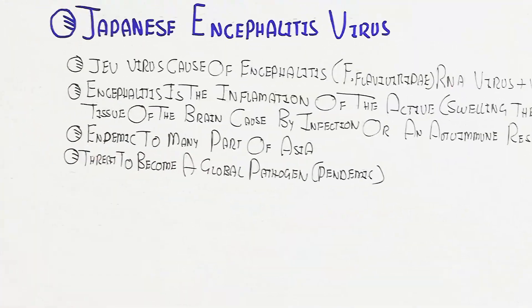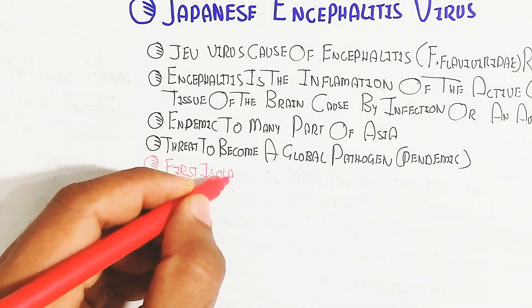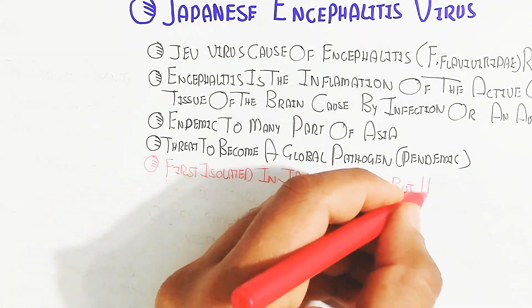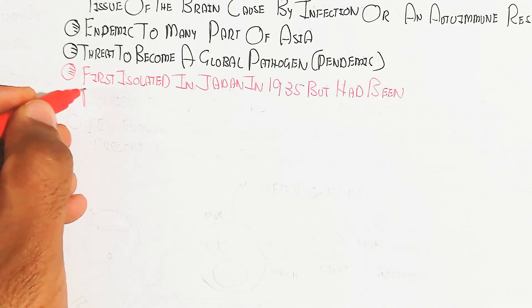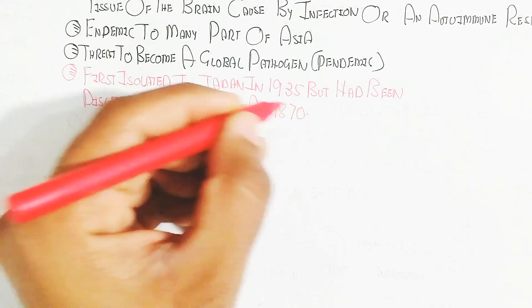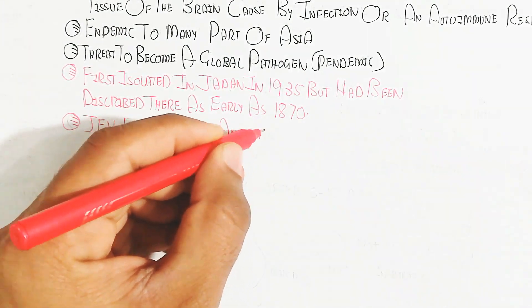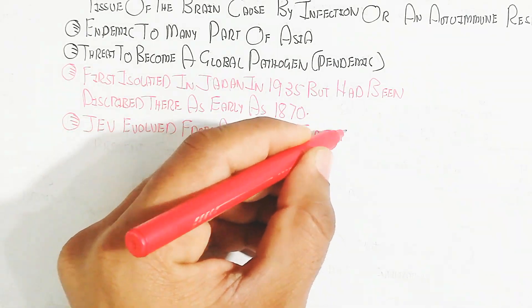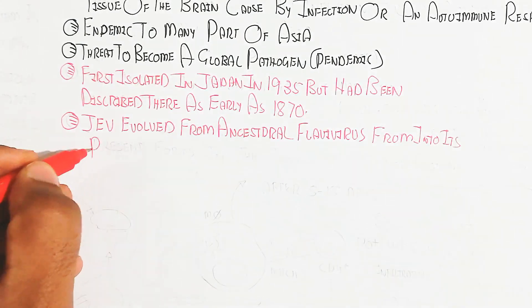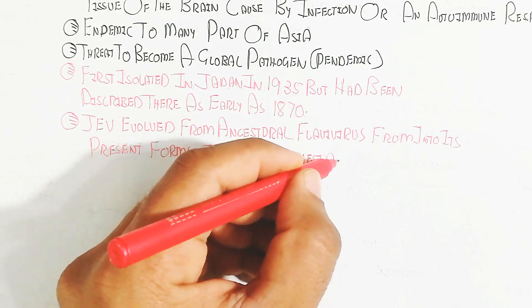JEV is endemic to many parts of Asia and threatens to become a global pathogen. It was first isolated in Japan in 1935 but had been described there as early as 1870. JEV evolved from an ancestral flavivirus into its present form in the Indonesia and Malaysia region.